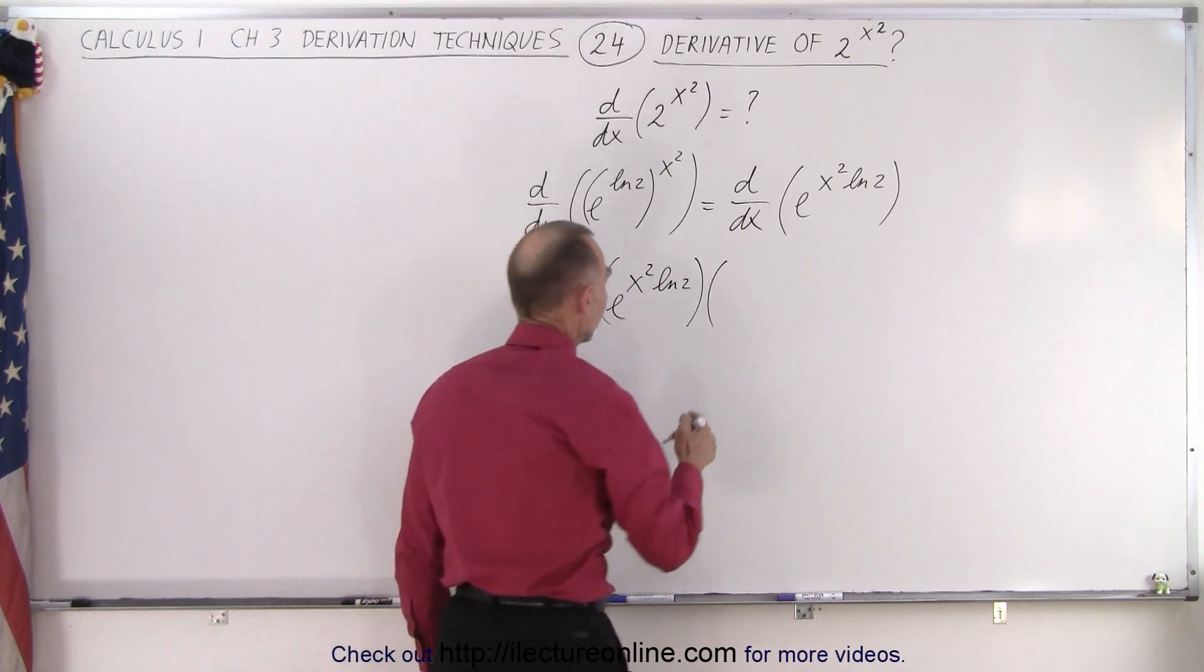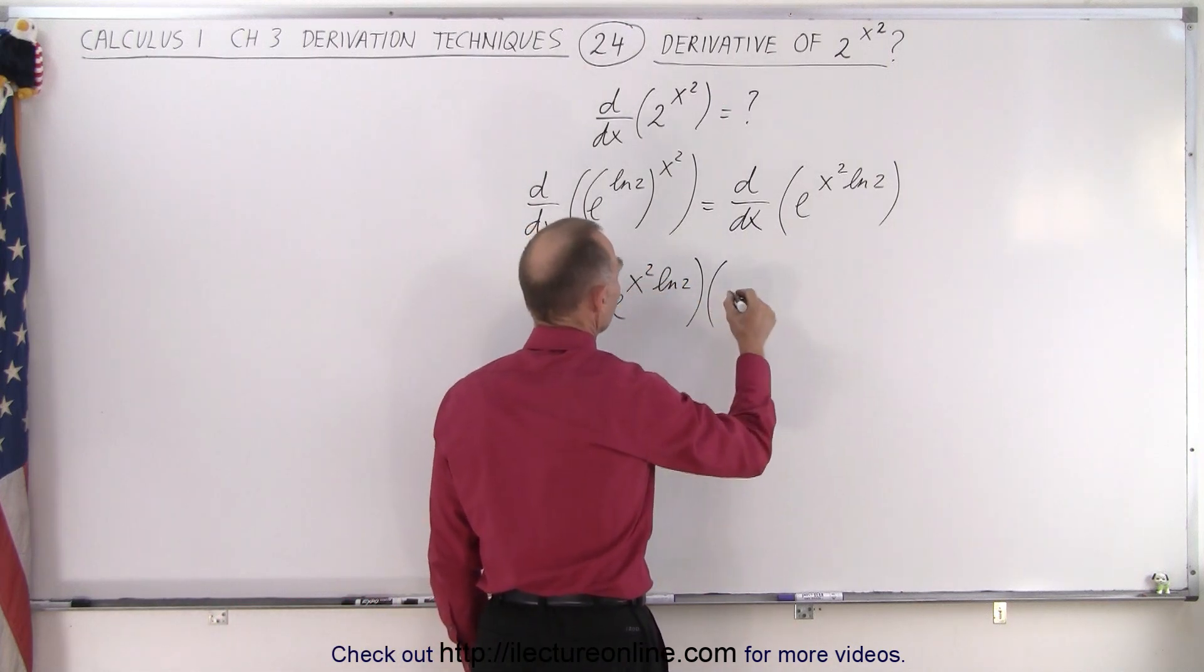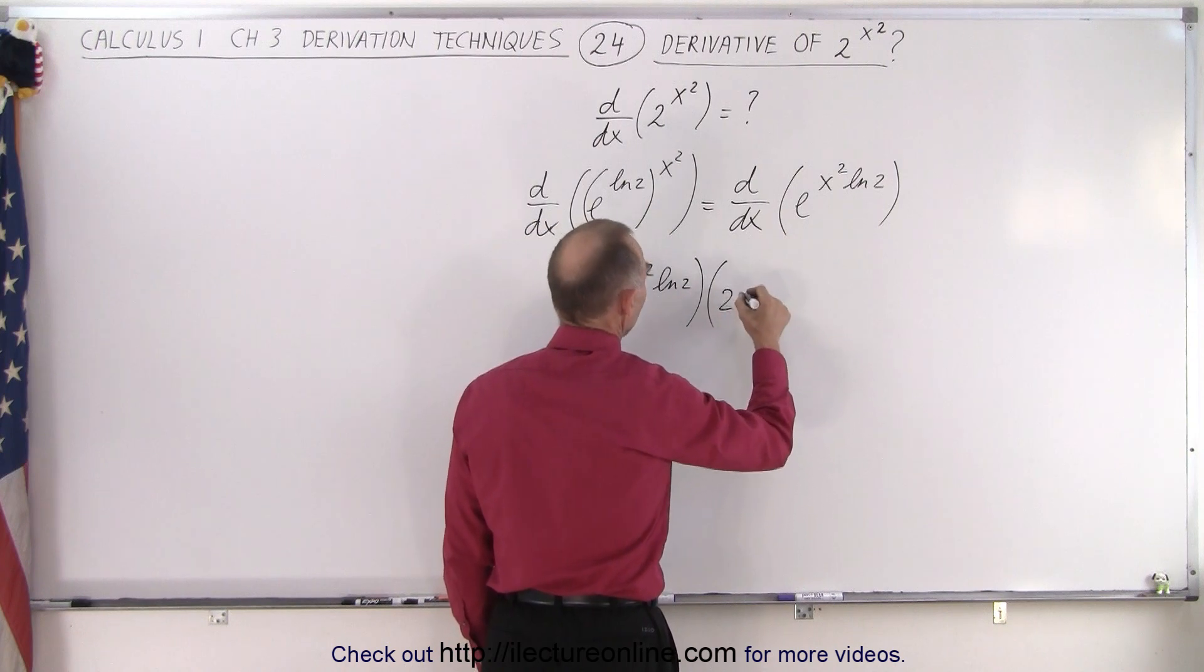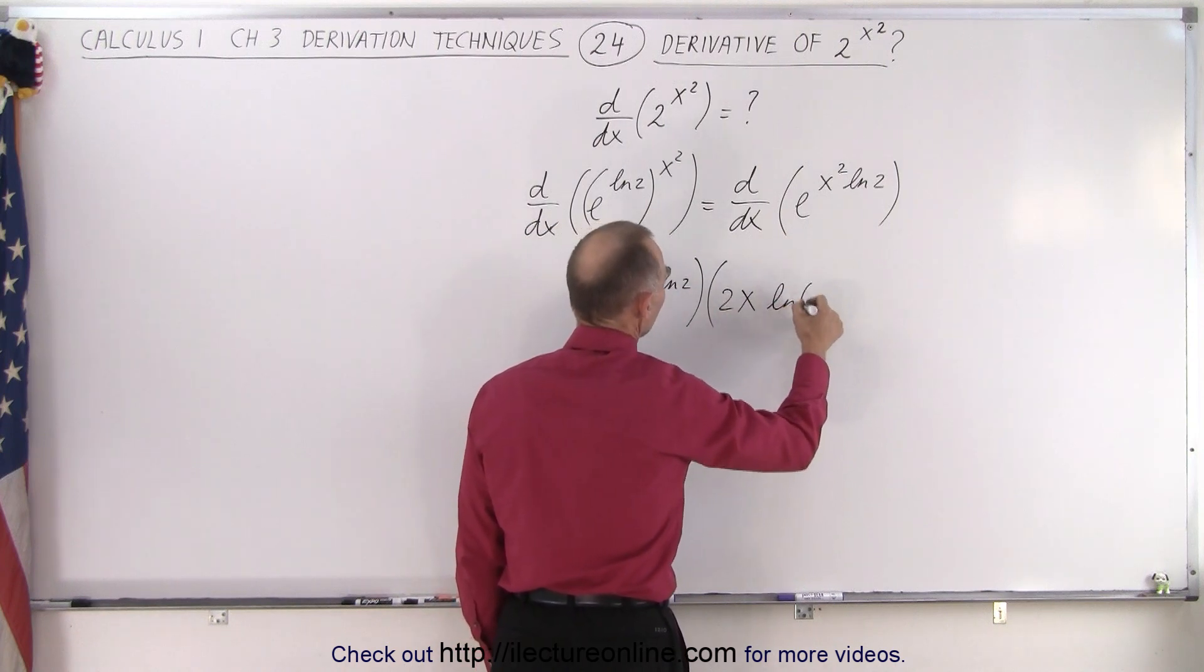That gives us 2 times x to the first power, times the natural log of 2.